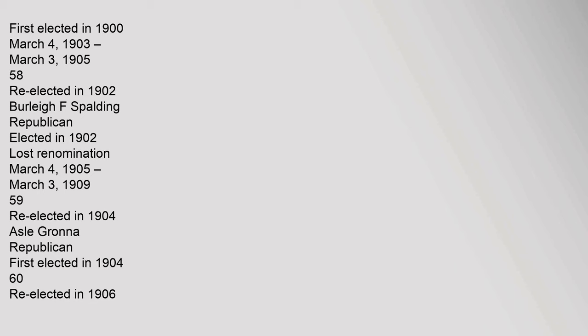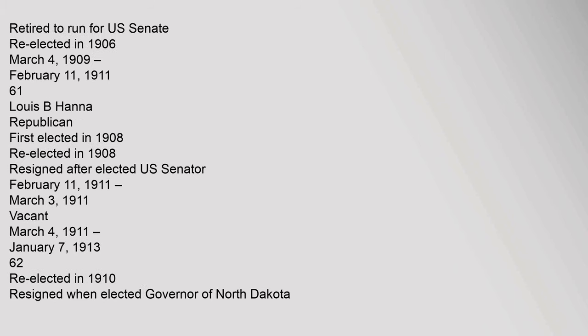From March 4, 1905 to March 3, 1909 (59th–60th Congresses): Thomas F. Marshall, Republican, re-elected in 1904; Asle Grana, Republican, first elected in 1904, re-elected in 1906, retired to run for U.S. Senate. From March 4, 1909 to February 11, 1911 (61st Congress): Louis B. Hanna, Republican, first elected in 1908, resigned after being elected U.S. Senator.